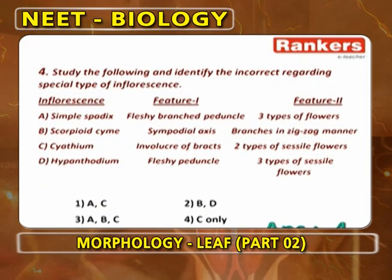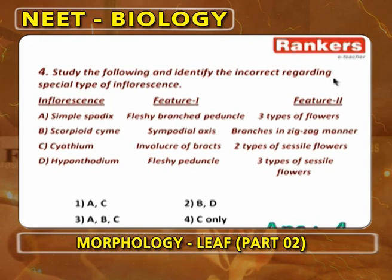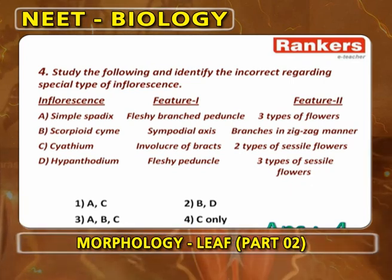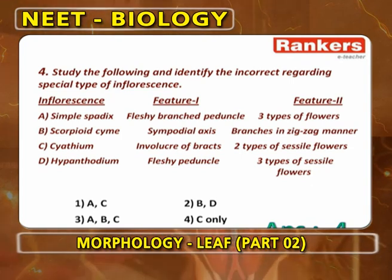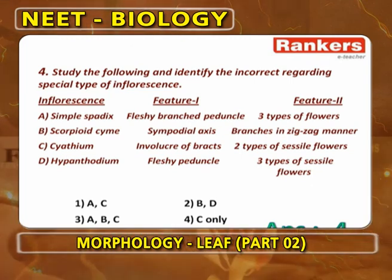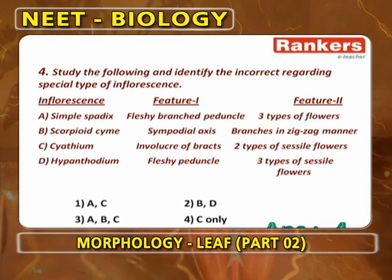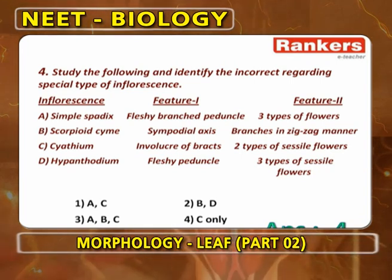Next: study the following and identify the incorrect statement regarding special type of inflorescence. Simple spadix has fleshy unbranched peduncle with three types of flowers — correct. Scorpioid cyme has sympodial axis with branches in a zigzag manner — correct. Cyatheum has involucre of bracts with two types of sessile flowers — this is wrong, because the flowers in cyatheum are pedicellate, not sessile. Hypanthodium with fleshy peduncle and three types of sessile flowers — correct.